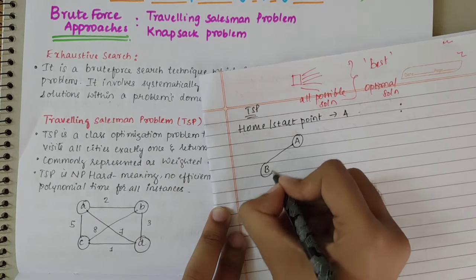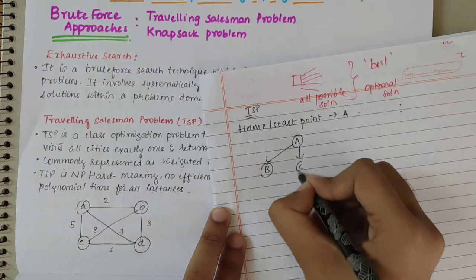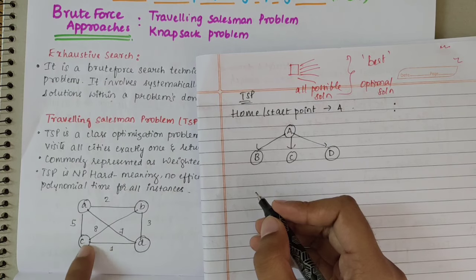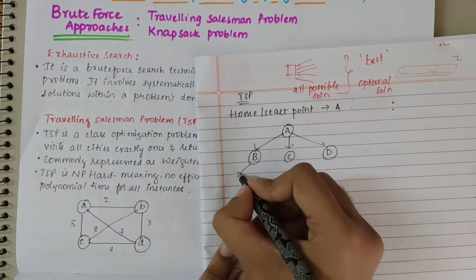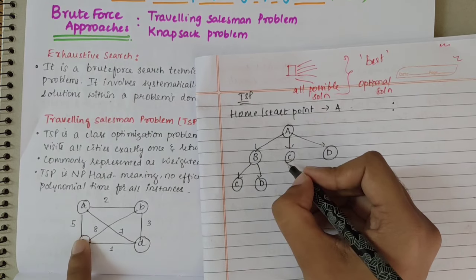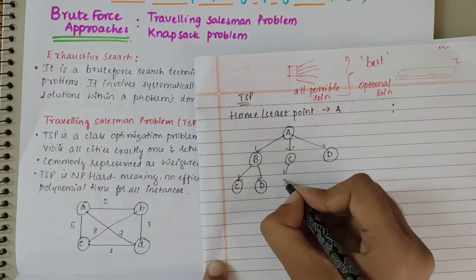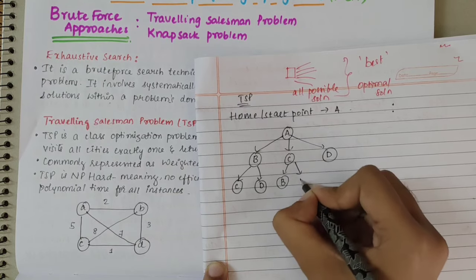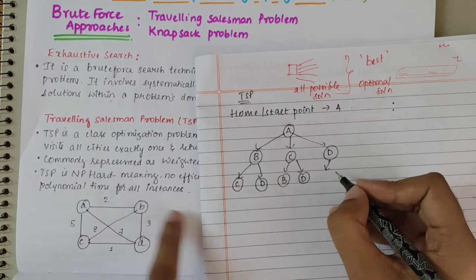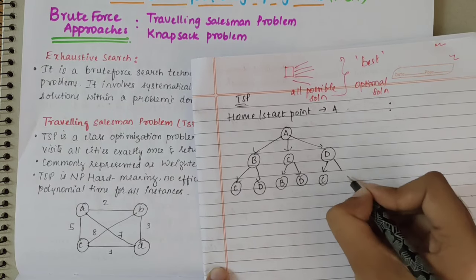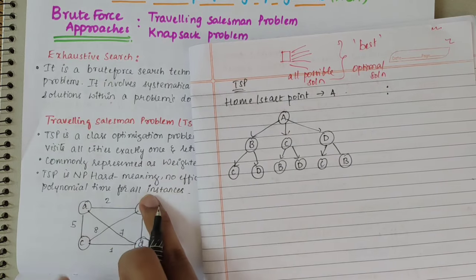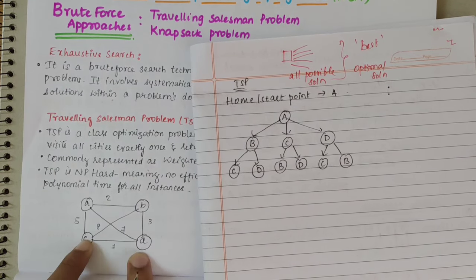From A, the salesman can go to B, C, or D. From B he can go to C or D; from C he can go to B or D; and from D he can go to C or B. For example, from A he goes to B, from B he goes to C, and from C he can go to D.